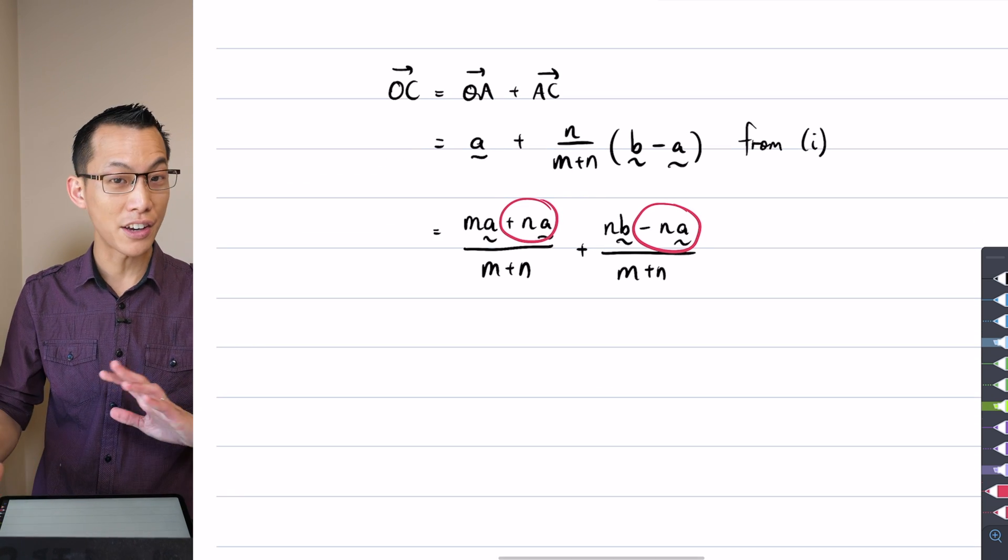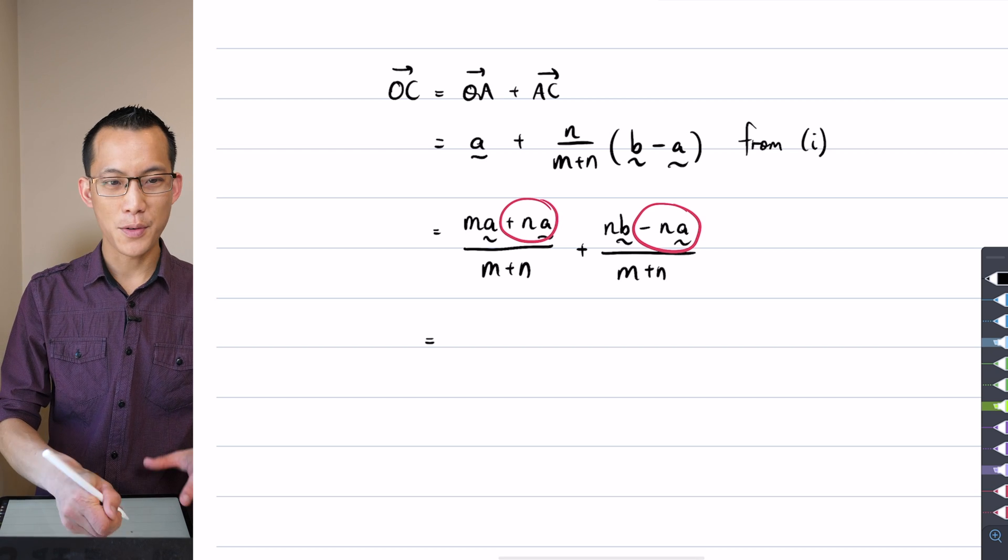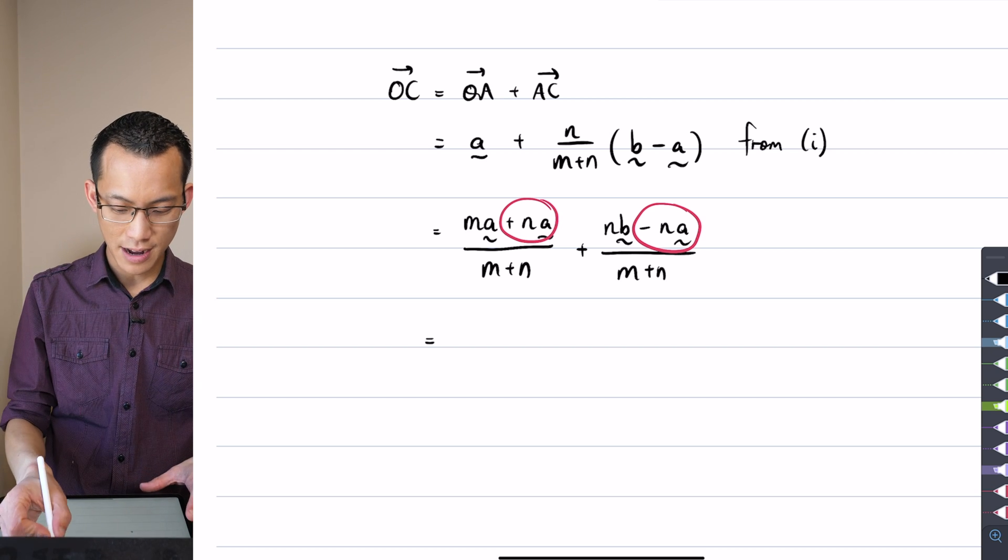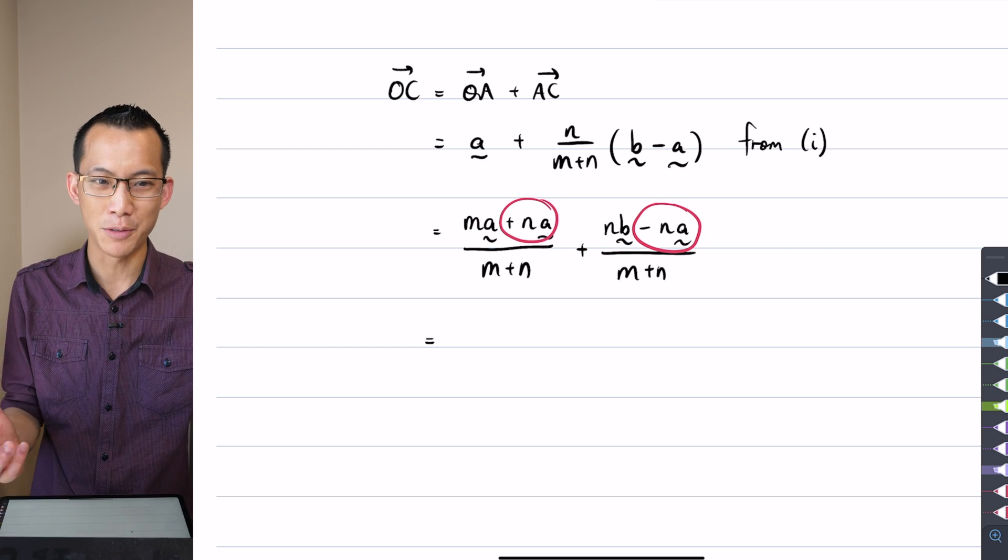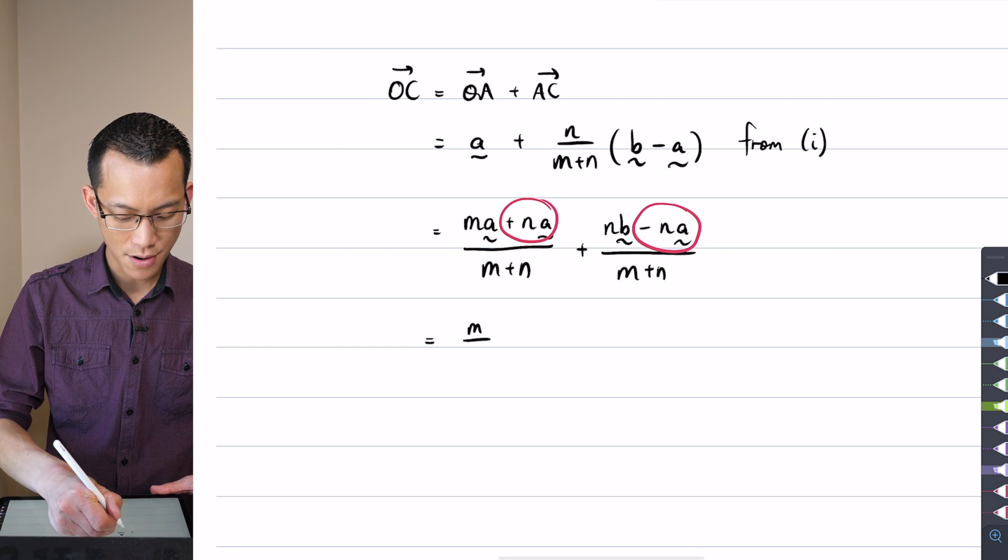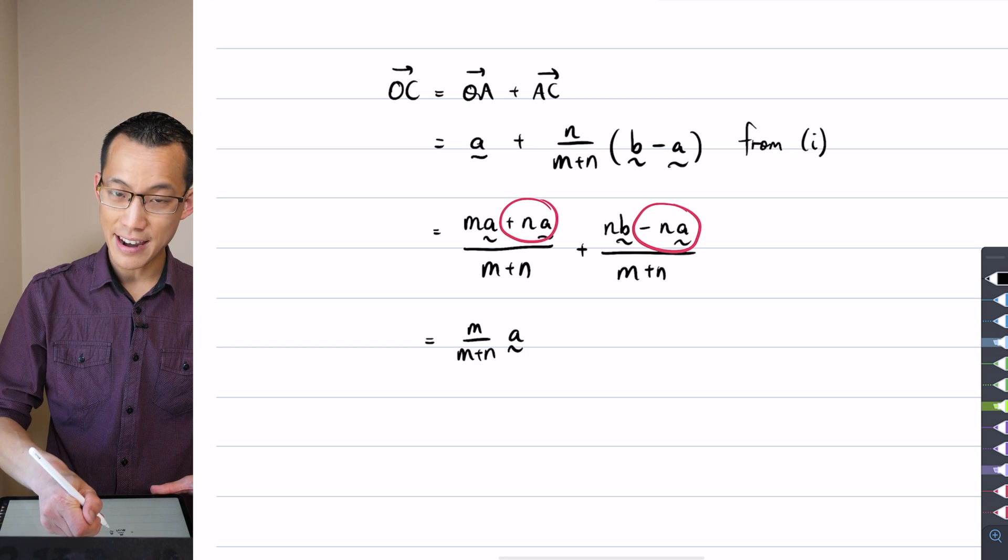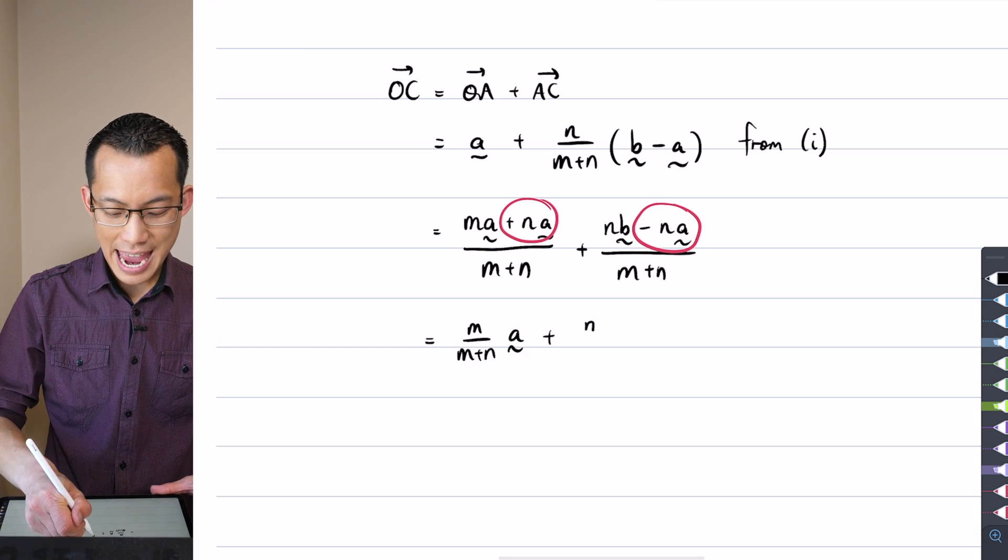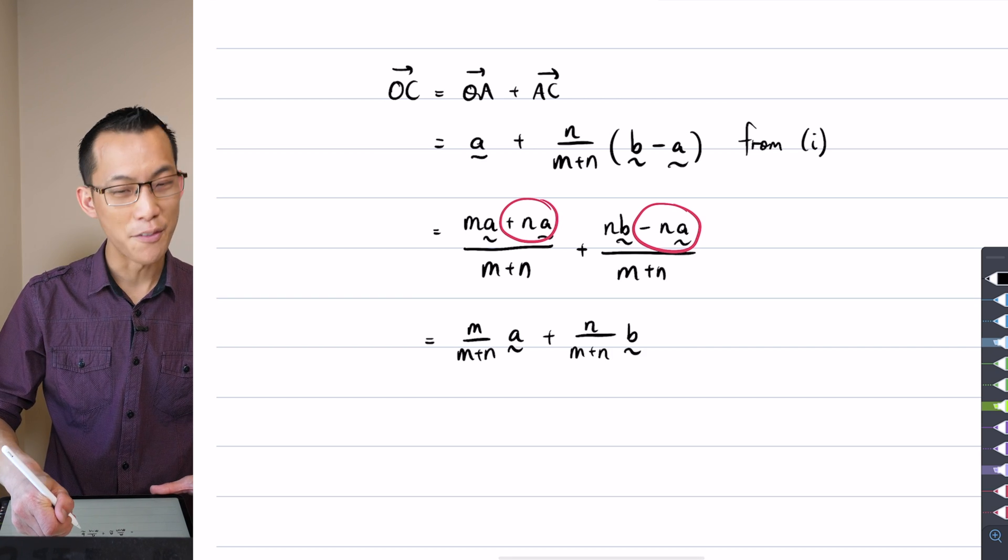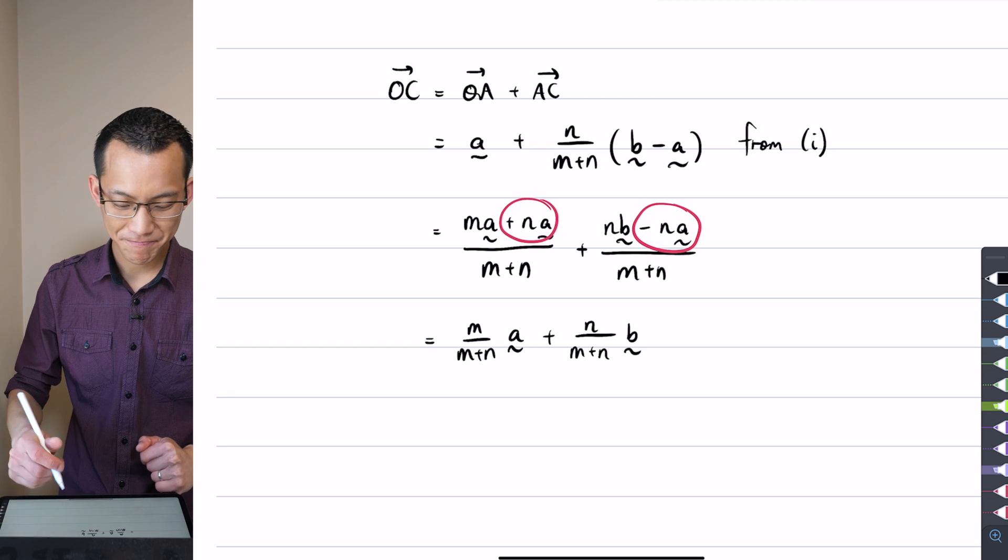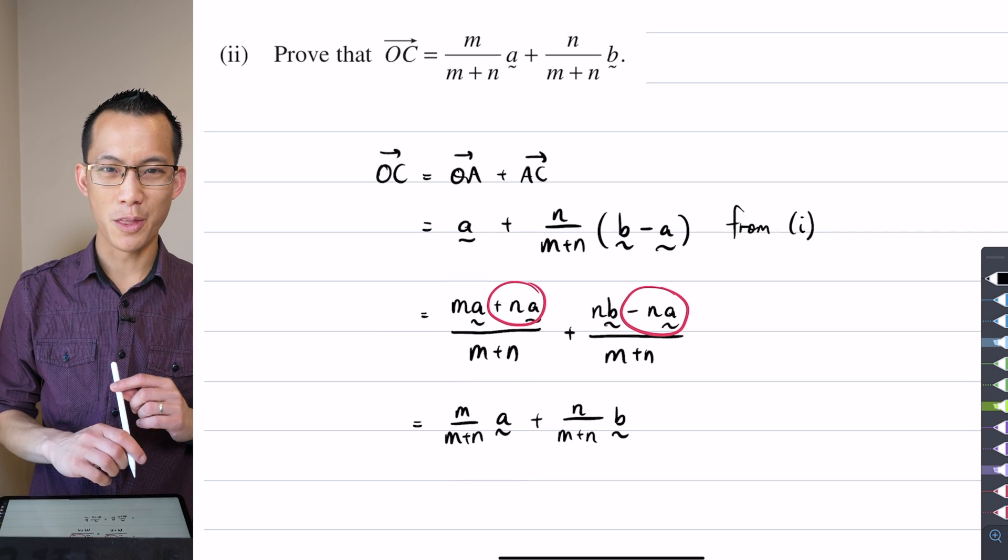And that leaves me with, if I separate out this term here and this term here, it's pretty much exactly what you need. There's the m on m plus n out the front lots of that a vector, and then there's the n on m plus n lots of the b vector, as required. So that's why you can see it's just worth the one mark.